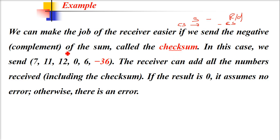The receiver can add all the numbers received, including the checksum. If the result is zero, because we are sending -36, it assumes no error. Otherwise, there will be an error.